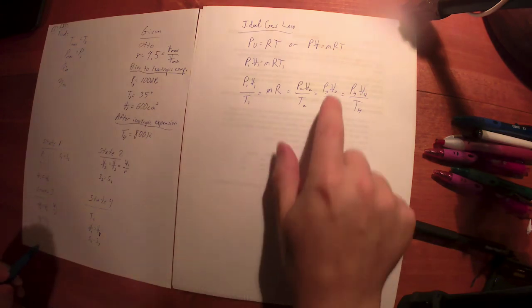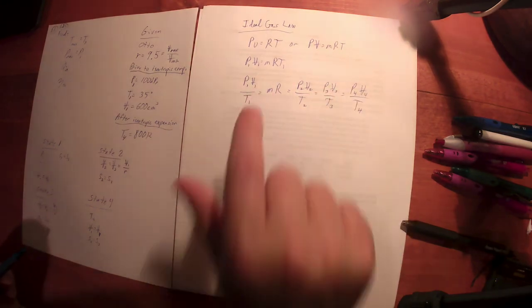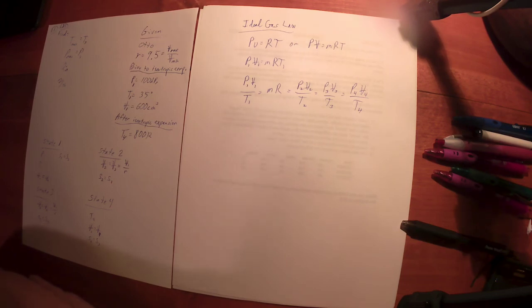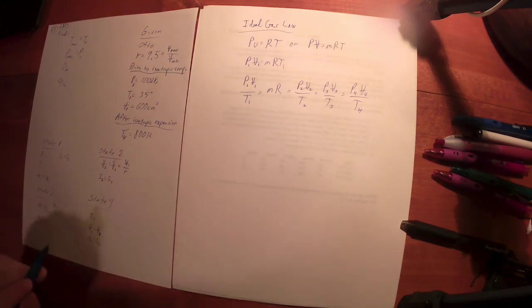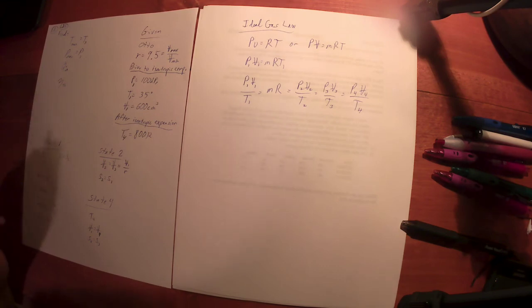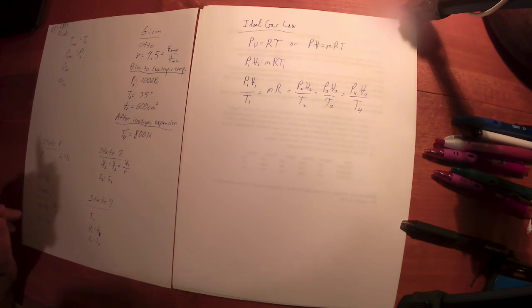So P2·V2 over T2 equals P3·V3 over T3 equals P4·V4 over T4. Between states 2 and 3 the volumes are constant; between states 1 and 4 the volumes are constant. You can see very quickly you now have four equations. There are multiple parameters and unknowns, but this is a really helpful algebraic tool. That's my timer — we'll go to the next video and talk more about properties.